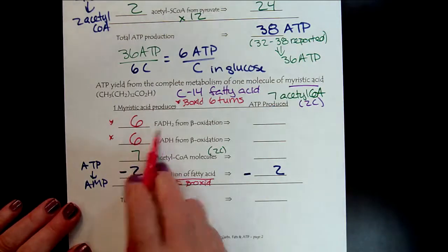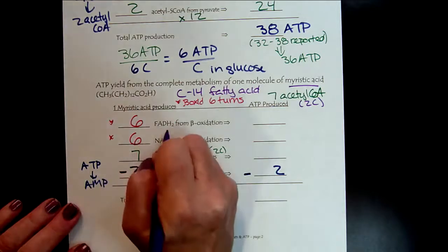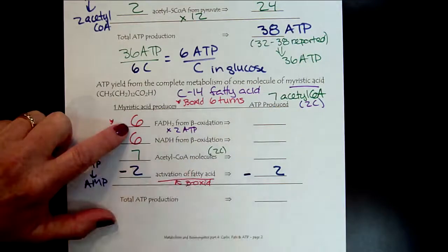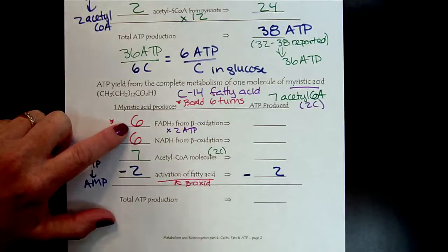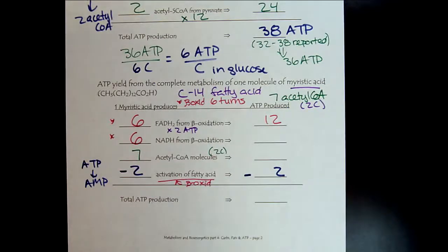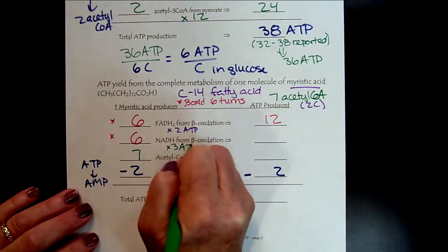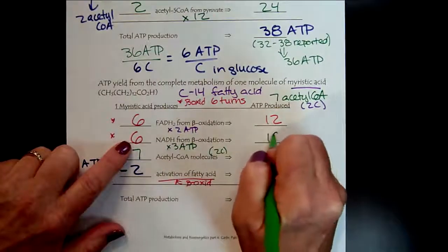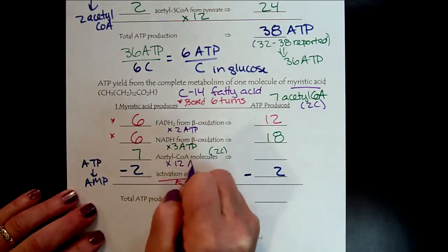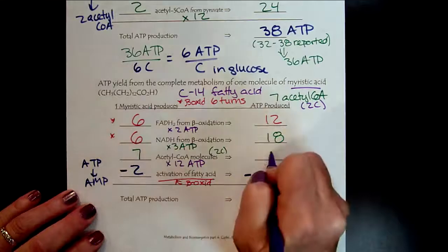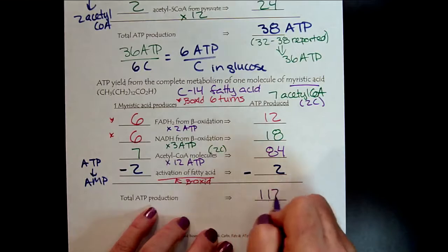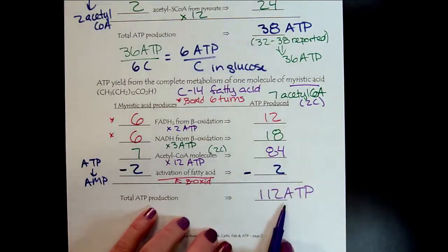Now, remember what I talked about with FADHs? They each produce two ATP. So if we had six, and each of those is going to produce two ATP altogether, that would be 12. And then the NADHs, remember that those would give us three ATP. So six times three would be 18. And then the acetyl-CoA's, those each produce 12. So seven times 12 is 84. So we add these all up, subtract two, and we get 112 ATP. So we get a lot more energy.